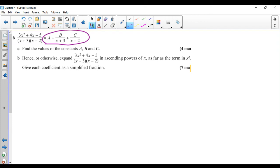So I'm going to jump straight to multiplying through by the denominator. So I've got 3x squared plus 4x minus 5. By multiplying through by those two brackets, A will have both of them because there's nothing to cancel. B will have the x minus 2 because the x plus 3 will cancel. And C will have the x plus 3 because the x minus 2 will cancel.